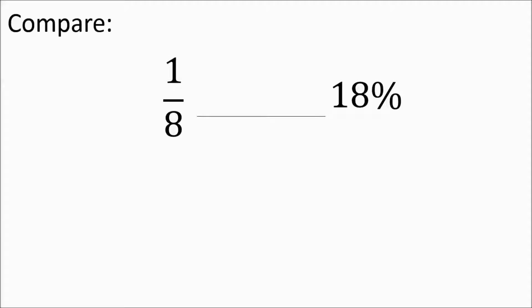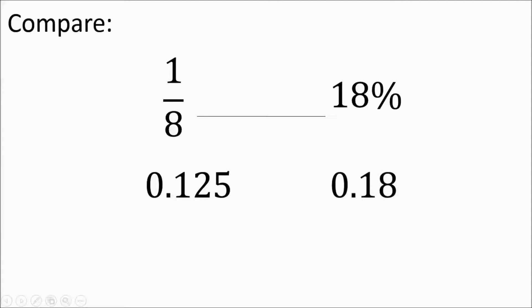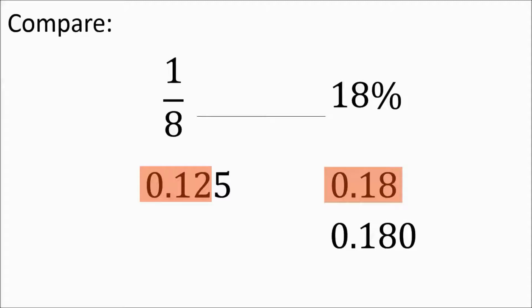Pause if you want to try this one yourself. We're going to make one-eighth into a decimal — that's half a quarter, which is 0.125. 18 percent becomes 0.18. You can think of it as 12 cents being less than 18 cents, or compare 125 thousandths to 180 thousandths. Either way, one-eighth is less than 18 percent.